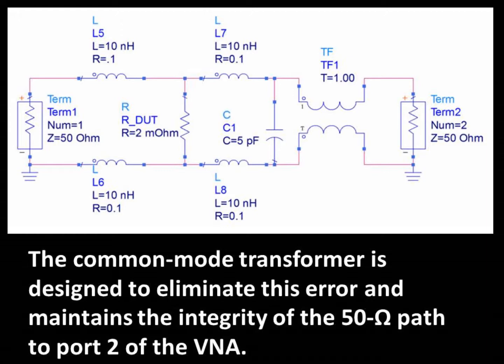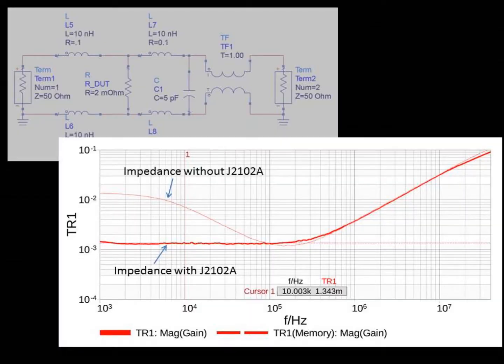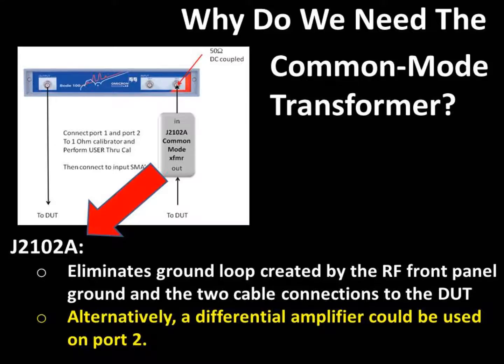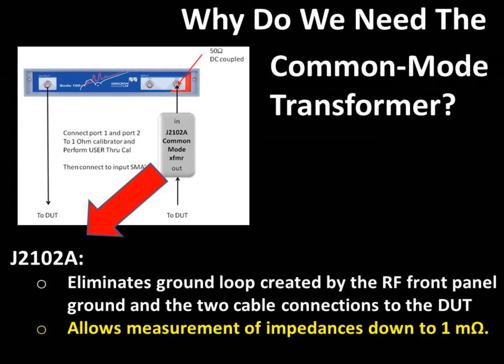The low frequency limitation is generally in the 100 Hz to 1 kHz range. A differential probe could also be used for port 2, but at a loss of sensitivity, degrading the SNR of the measurement and making it more difficult to measure low values. Note that with this common mode transformer, we can easily measure impedance values as low as 1 milli-ohm using this two-port shunt-through impedance measurement technique.